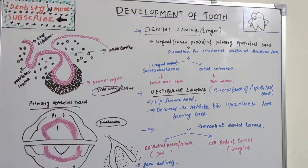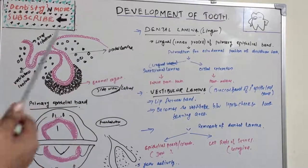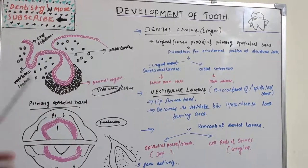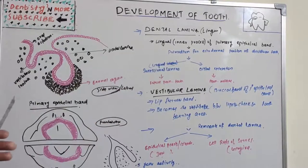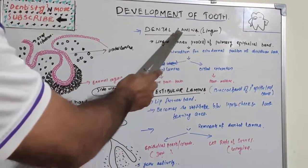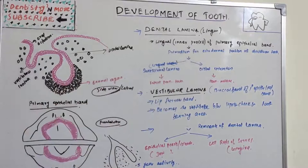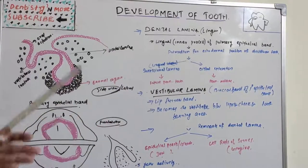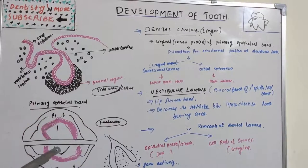Since deciduous molars are succeeded by permanent premolars via successional lamina, there is no space for permanent molars in the primary epithelial band. Therefore, permanent first, second, and third molars arise from the distal extension of the dental lamina.